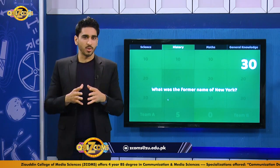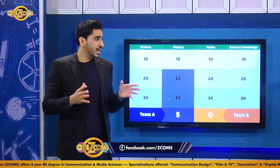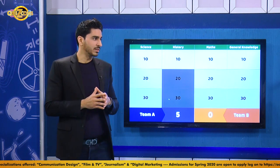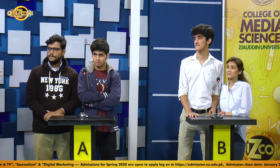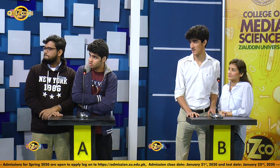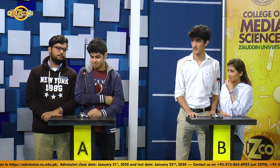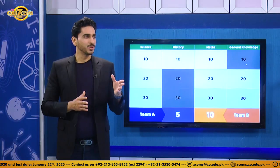The host reminds Team A not to buzz while a question is being asked and not to buzz if they don't know the answer — buzzing early cost them points. Team A chooses general knowledge for 10. The question: which is the largest city in Africa? Team B buzzes first and answers Cairo. That is absolutely correct! Team B takes the lead with twice as many points as Team A.